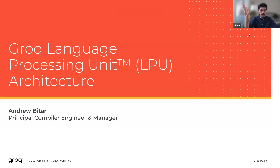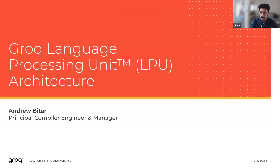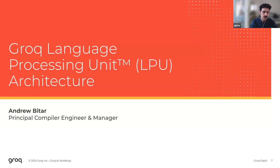Hello everyone. So today I'll be giving an overview of the architecture that powers our language processing unit, or LPU. This is largely a repeat of the talk I gave during the last ALCF workshop, so if you've already seen this talk, I still encourage you to follow along. And if you have any interesting questions, I'll make sure to leave time at the end. The talk is largely about the architecture, not necessarily focused only on large language models, even though that has been most of the public material related to Groq as of late. But hopefully seeing these details of the architecture, even if you don't work on LLMs, you may see other interesting opportunities for applications, as the LPU has been designed for much more than just LLMs.